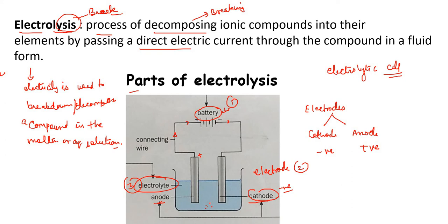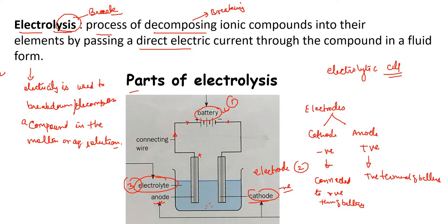The anode electrode is connected to the positive terminal of the battery, and the cathode electrode is connected to the negative terminal of the battery. The electrolyte is the solution that is going to break down. It must be in some ionic form. Electrolytes conduct electricity through free-moving ions, so the ions must be free to move for electricity to flow.